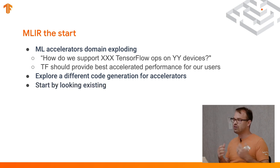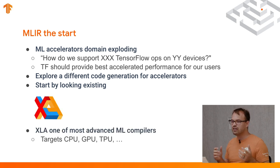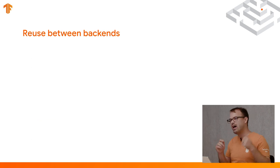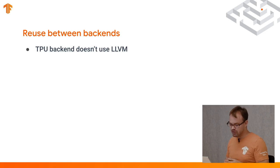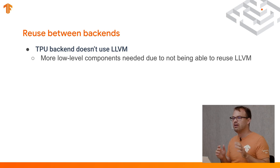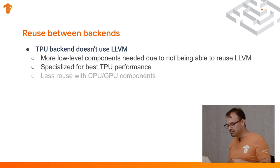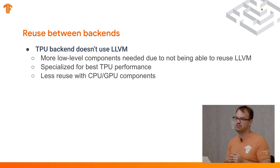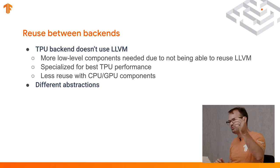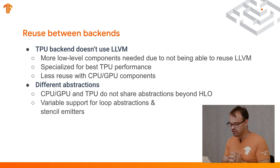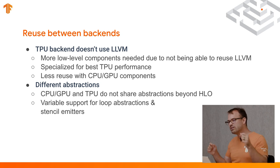We started looking at our existing code generator framework for accelerators — XLA. XLA is one of our most advanced machine learning compilers. We have targets for CPU, GPU, TPU, and other backends. How can we increase the reuse between the CPU, GPU, and TPU backends? At the moment, the TPU backend doesn't use LLVM, so we have more low-level components needed there. The TPU backend is specialized for the best TPU performance, but because it's so specialized, there's less reuse with the CPU and GPU components. Also, the CPU, GPU, and TPU do not share abstractions beyond the HLO level — you'll have different levels of support for different loop abstractions, as well as stencil emitters between the two. This makes reusing code between them more difficult.